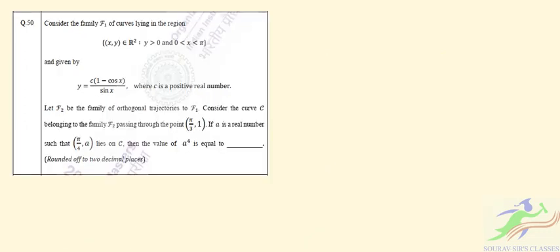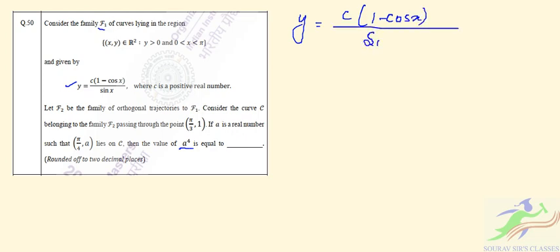Question number 50: consider the family F₁ of curves lying in the region where (x, y) ∈ ℝ² with y > 0 and x ∈ (0, π). The curve is given by y = C(1 - cos x)/sin x. Let F₂ be the family of orthogonal trajectories to F₁. The curve C belongs to family F₂ and passes through the point (π/3, 1). We need to find the value of A⁴, where (π/4, A) lies on curve C.